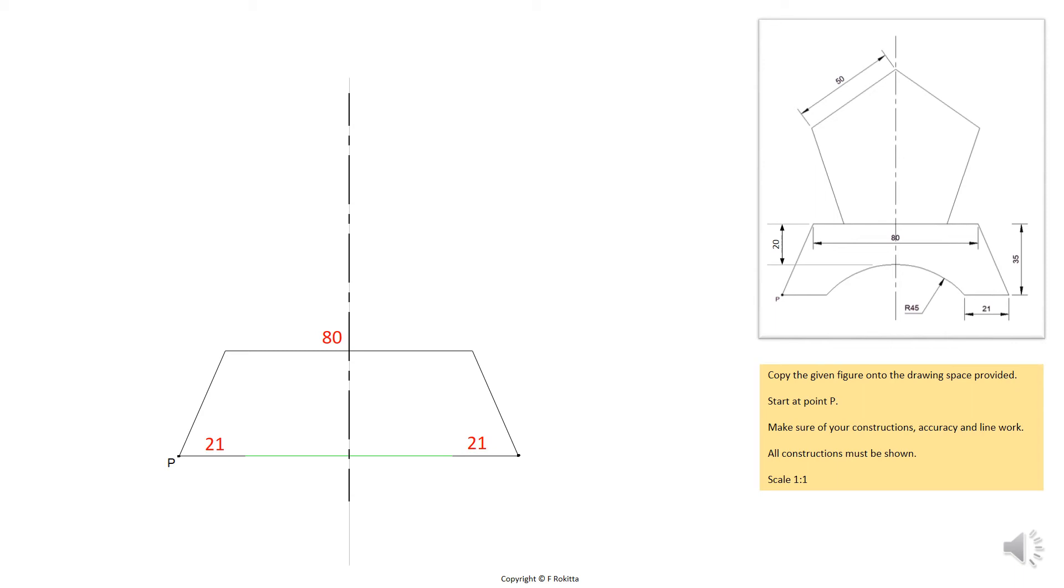The next phase of our drawing requires that we draw the 45 mm arc at the bottom of our drawing. In order to do this we need to make use of the dimensions given on the 2D schematic. You will notice there's a 20 mm height from the top line of our base to the pinnacle of the arc.